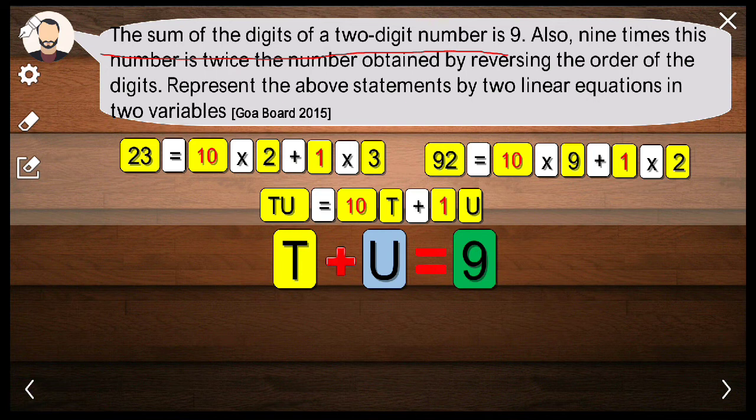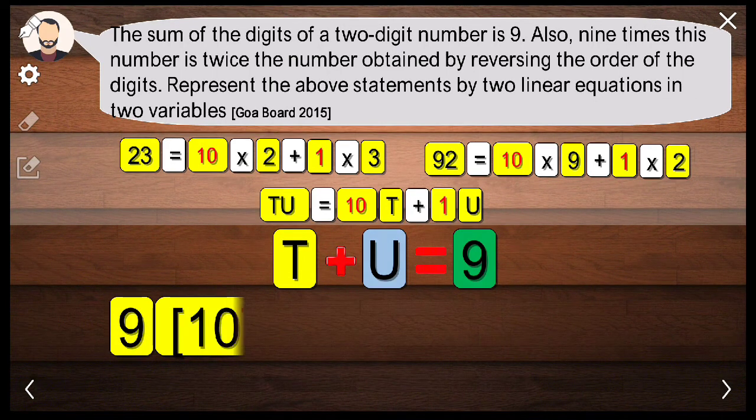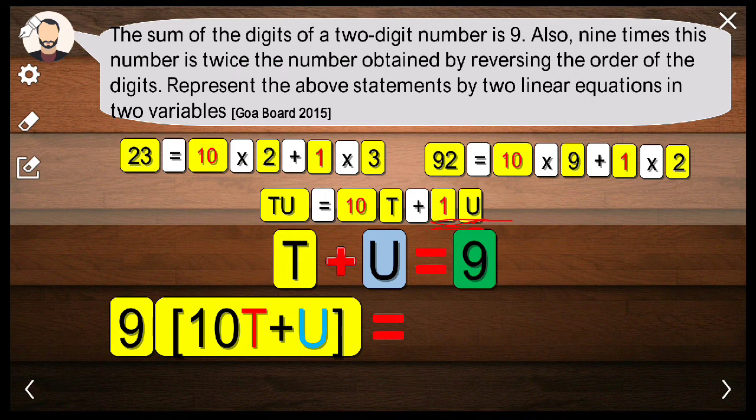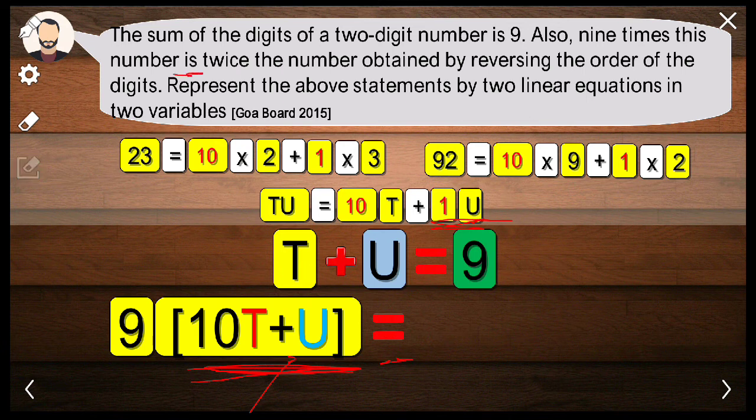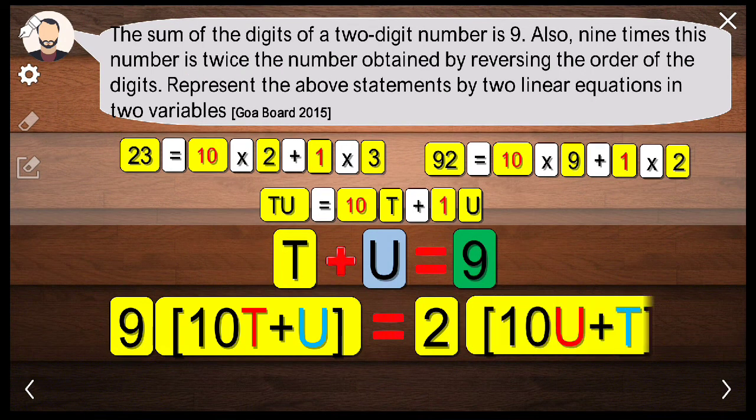The next part is 9 times this number, which number? This number. So 9 times this number is twice the number obtained by reversing the order of the digits. 9 times this number, 10T plus U, equals twice the number obtained by reversing.